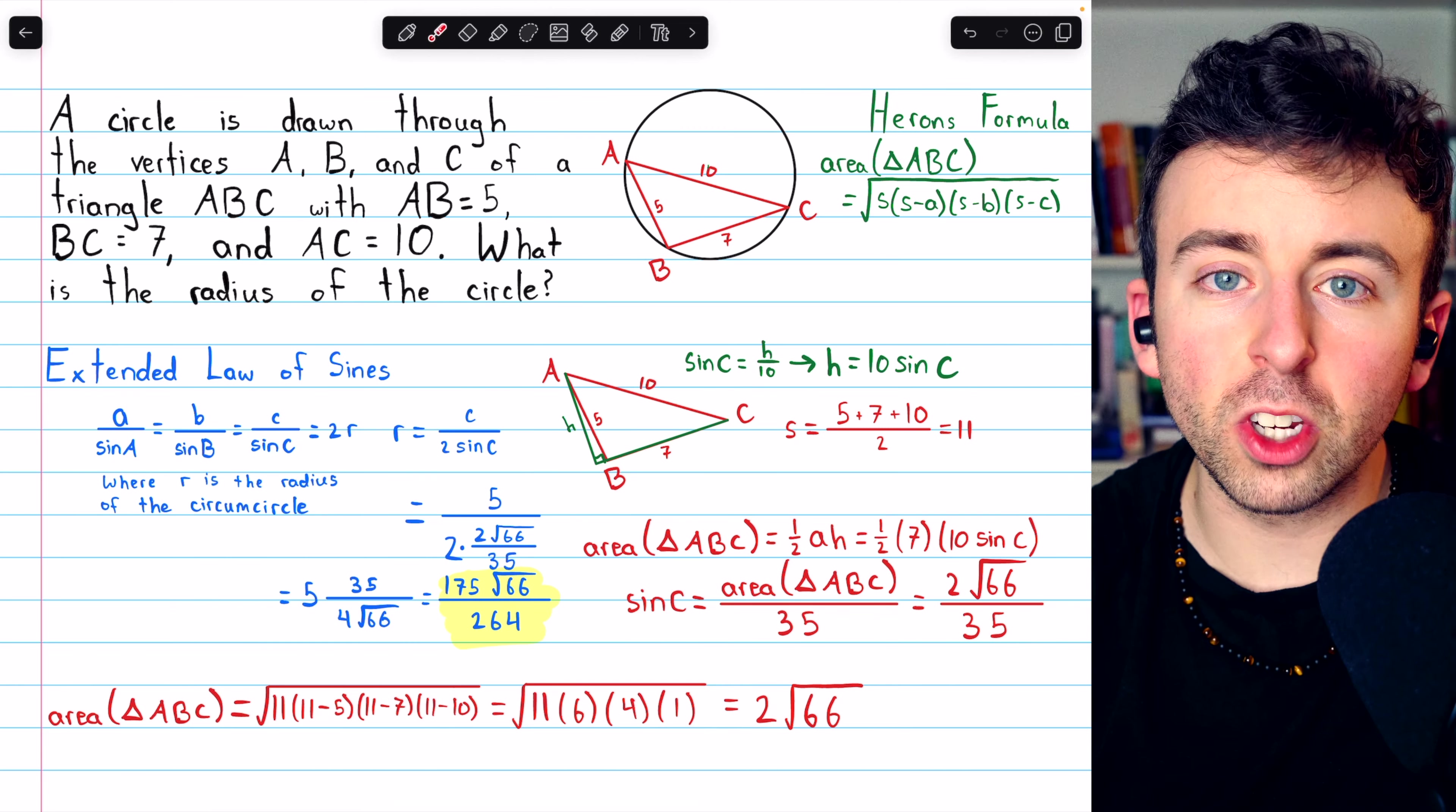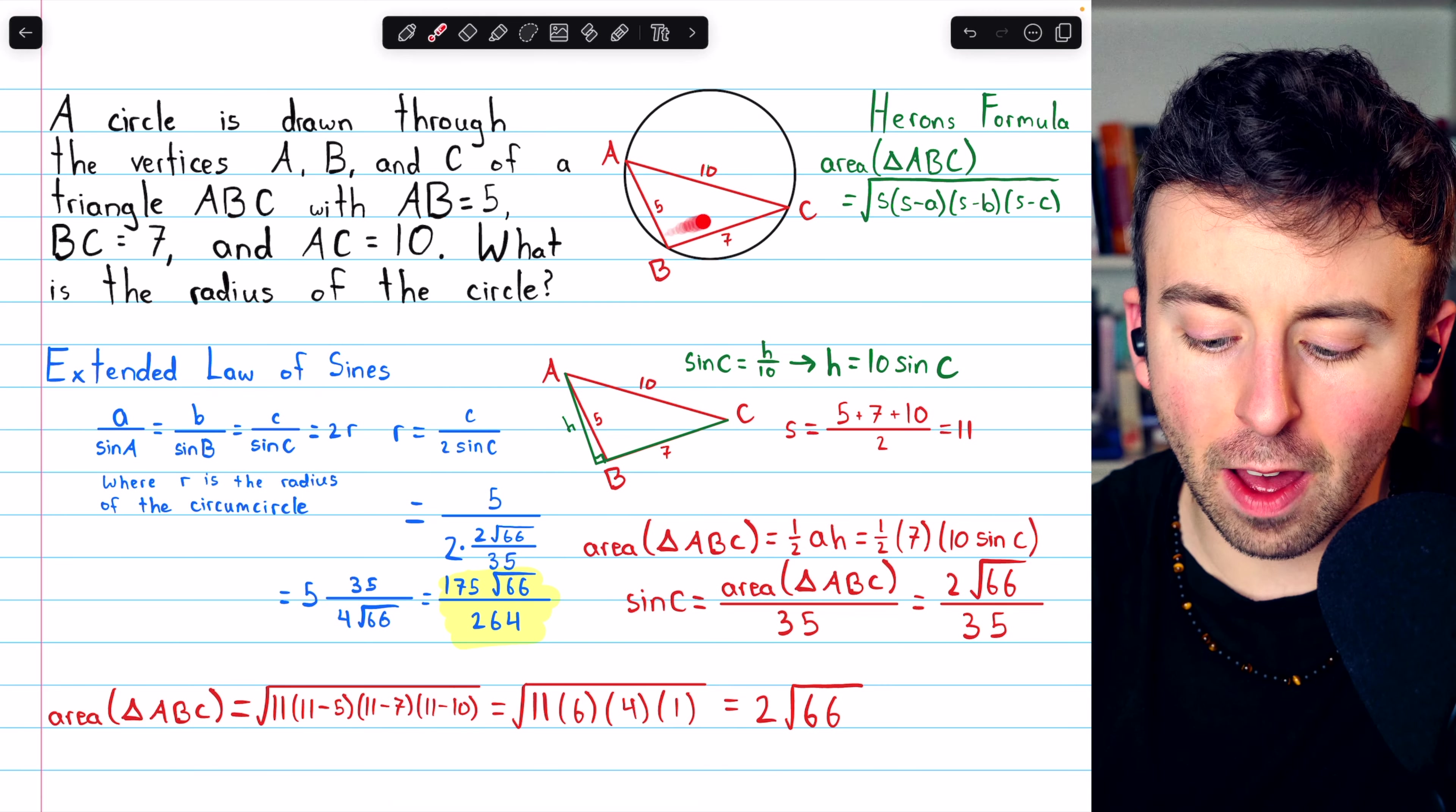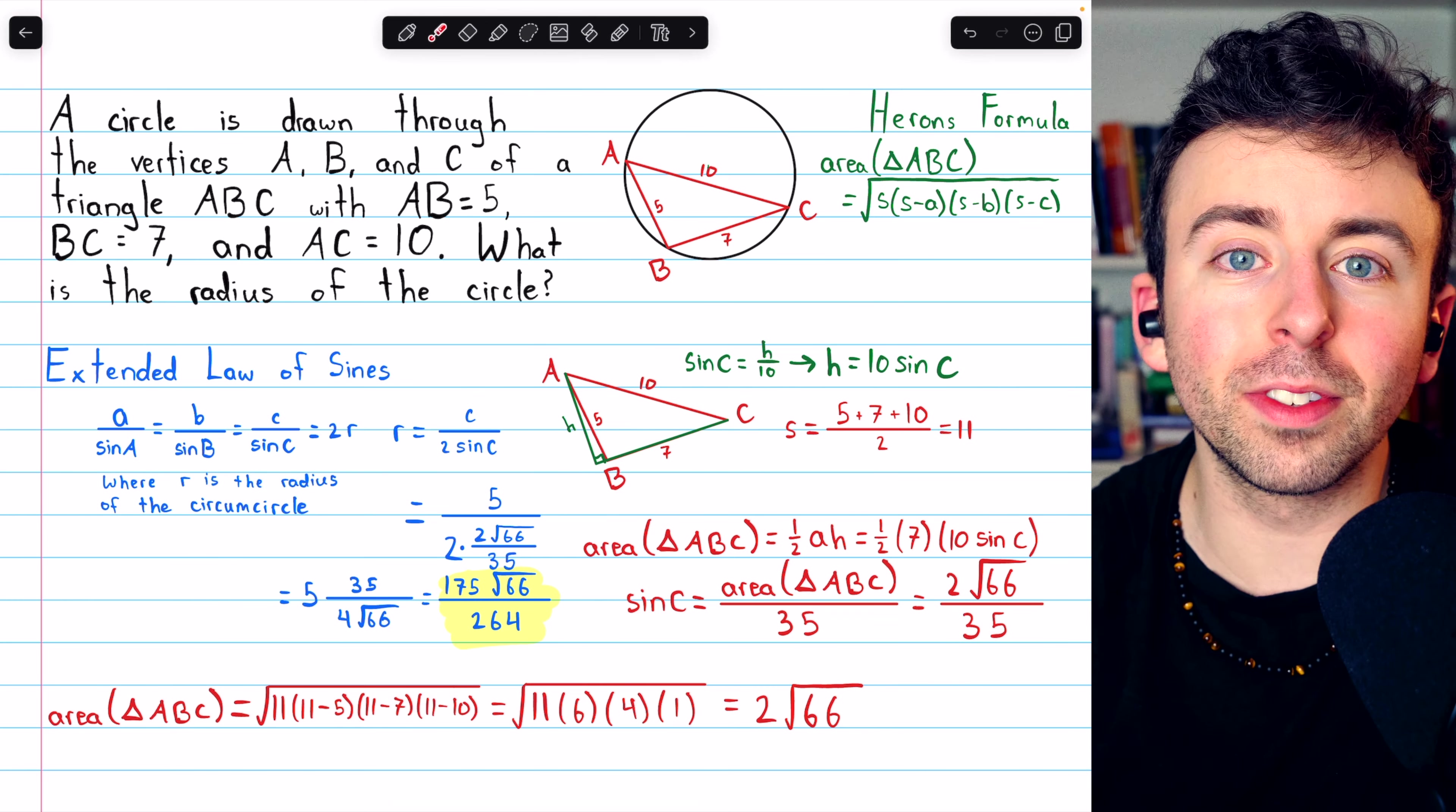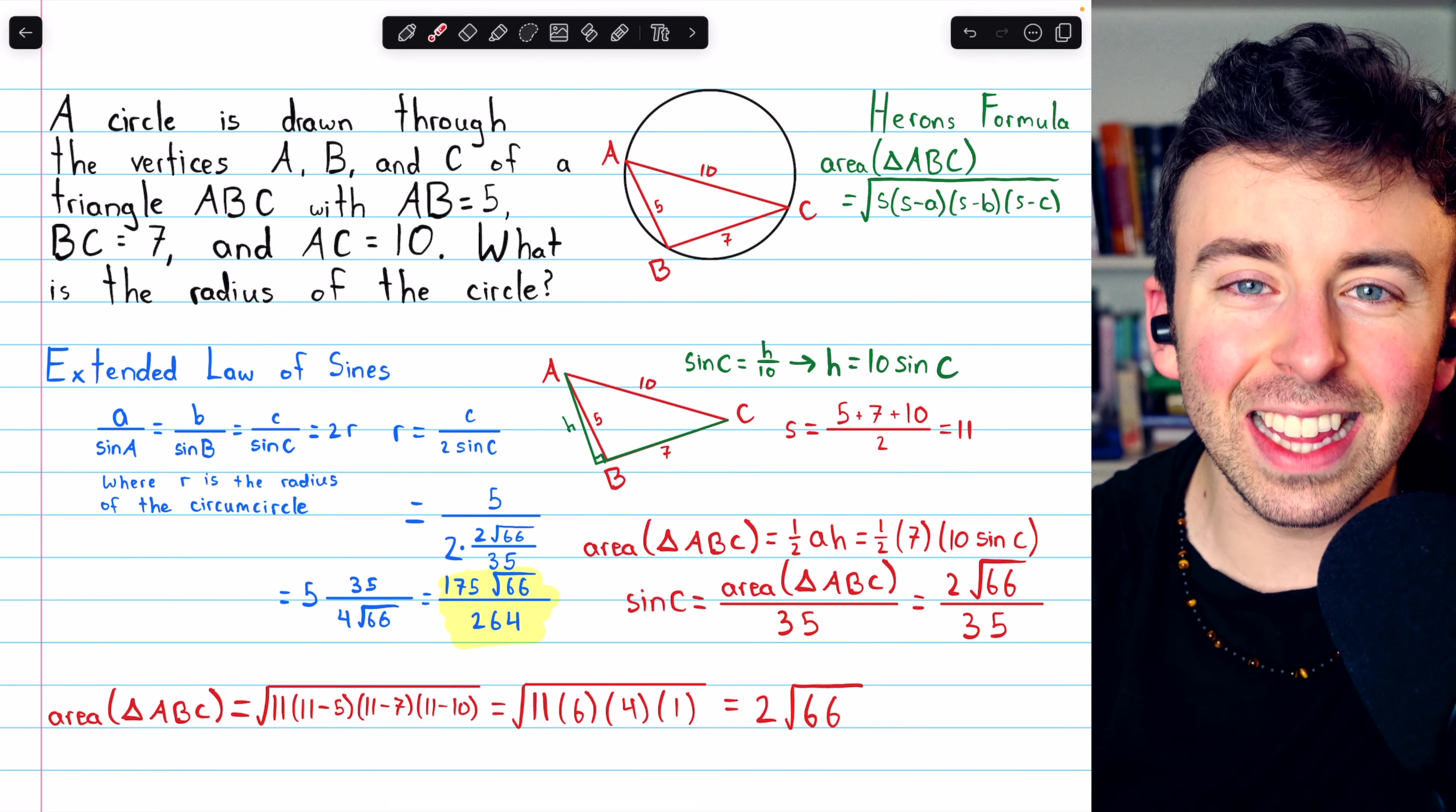So there's a pretty cool problem using some geometry and trigonometry in order to find the radius of a circle just from the side lengths of an inscribed triangle. Let me know in the comments if you have any questions or your own solution to this problem. And you can check out more interesting math problems in my playlist. Link in the description. Thanks for watching.